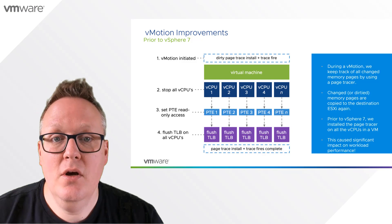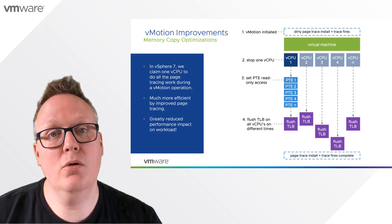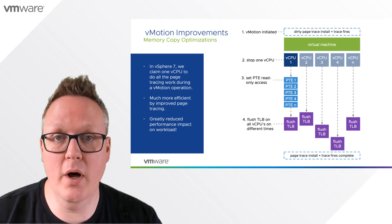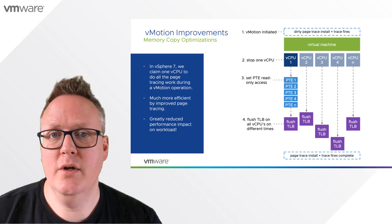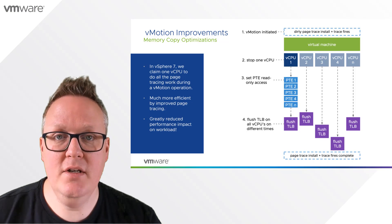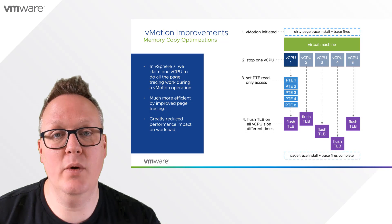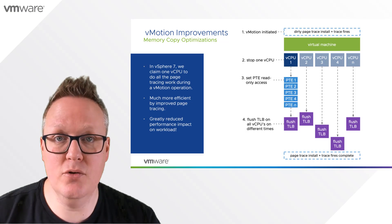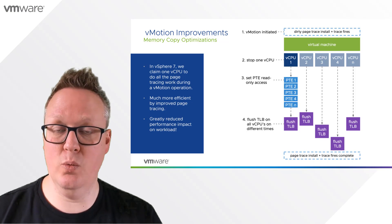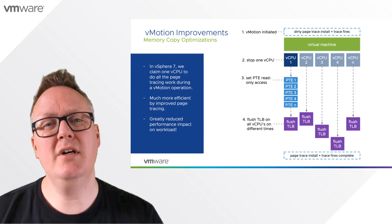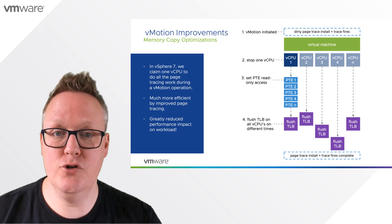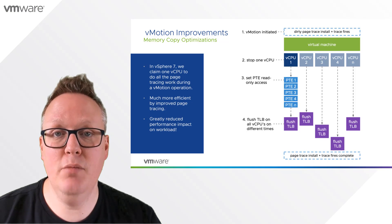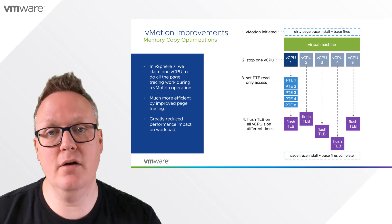With vSphere 7, we changed that algorithm. No longer do we need to stop all the vCPUs configured for a virtual machine. We just claim one, and that one vCPU will set all the PTEs — all the memory pages — to read-only, and it will process all the page firings. The other vCPUs are just working and doing computations for the workload running inside the virtual machine, so there's a lot less impact. In the end, we do need to flush the TLBs on all vCPUs, but we do that on different timings instead of all at once.